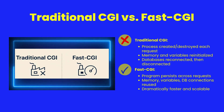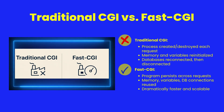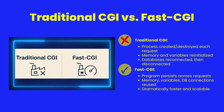With CGI, every request meant tearing down and rebuilding the application — memory allocations, variable resets, database connections, everything restarted. FastCGI avoids that by keeping the process alive. This reuse of memory and connections makes ShearPower handlers highly responsive under load.